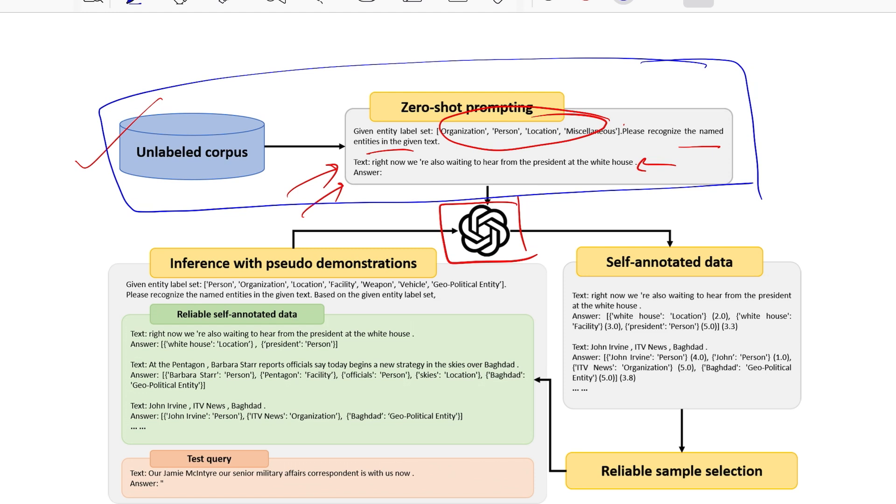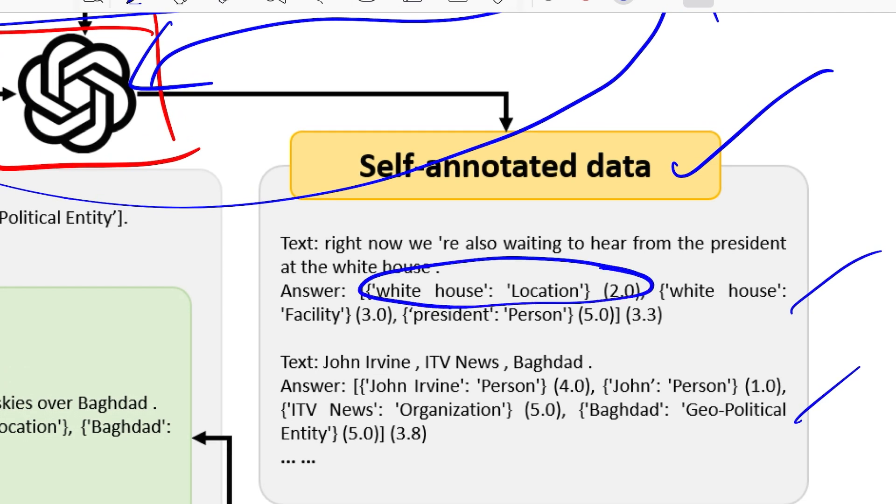So now let's move on to the right side and we see as and when this goes as input to your GPT model you have a stage called self-annotated data. So what it does is it'll try to use the prompt that you gave and based on that it'll go and perform annotation on all the unlabeled corpus that you had for the entities that you asked for. And it will not only do that, it'll print out certain numbers against each entities and also at the entire output level which is 3.3 in this case. So these are entity level confidence and 3.3 is sample level confidence. So how confident is your model when saying White House is a location versus White House is a facility?